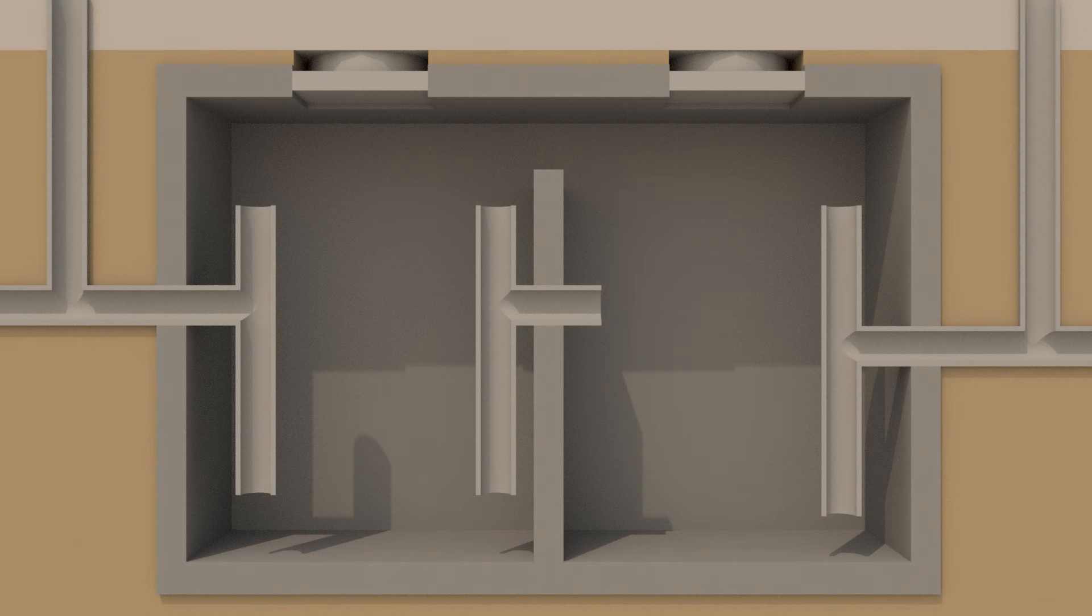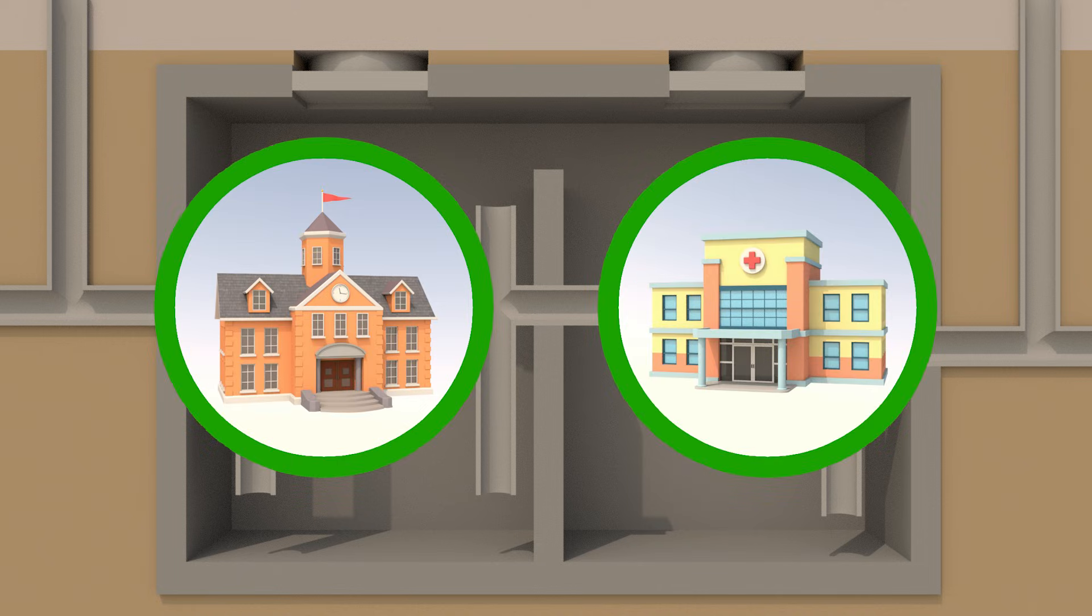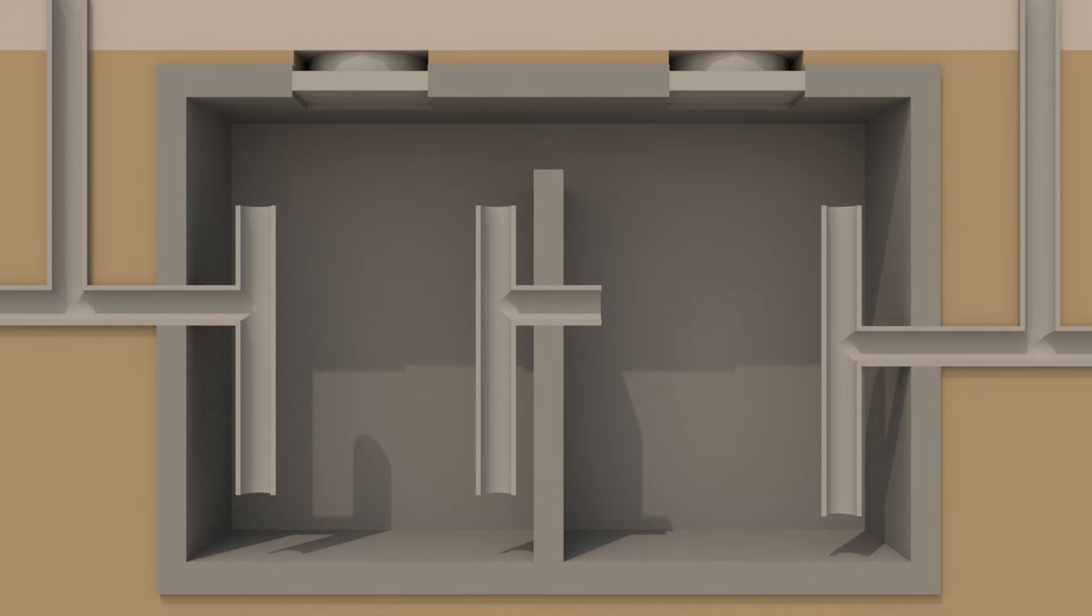That's where grease traps, also known as grease interceptors, come in. Food service establishments, also including schools and care facilities, all rely on these devices to intercept FOG before it causes problems.